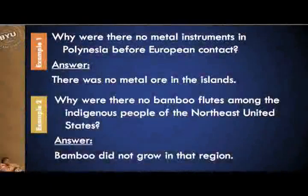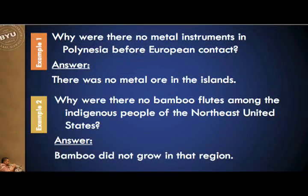For example, we might ask why were there no metal instruments in Polynesia before European contact? The answer would be there was no metal ore in the islands. That silence of metallurgy — using metal to make tools and materials — was unknown in Polynesia and the Pacific islands before the Europeans came and brought nails and other metal objects, and then the Polynesians became very interested in these materials.